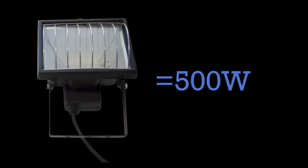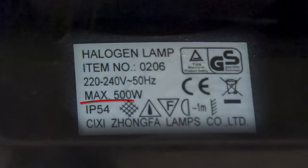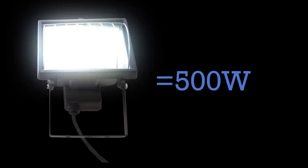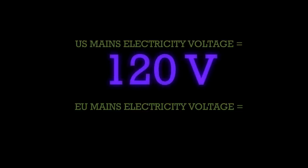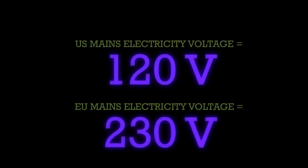Let's take a look at an example in which we know that our appliance is using 500 watts. The amount of watts is usually printed somewhere on your device. The next thing we need to know is the voltage. The voltage of US mains electricity is 120 volts; inside EU countries the voltage is usually 230 volts. Let's use the US number for this example.